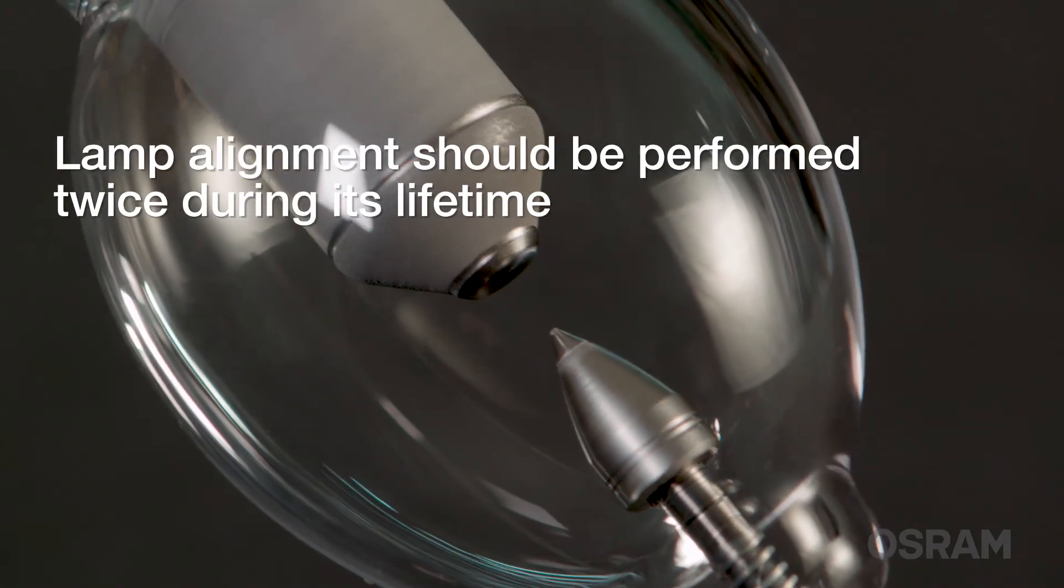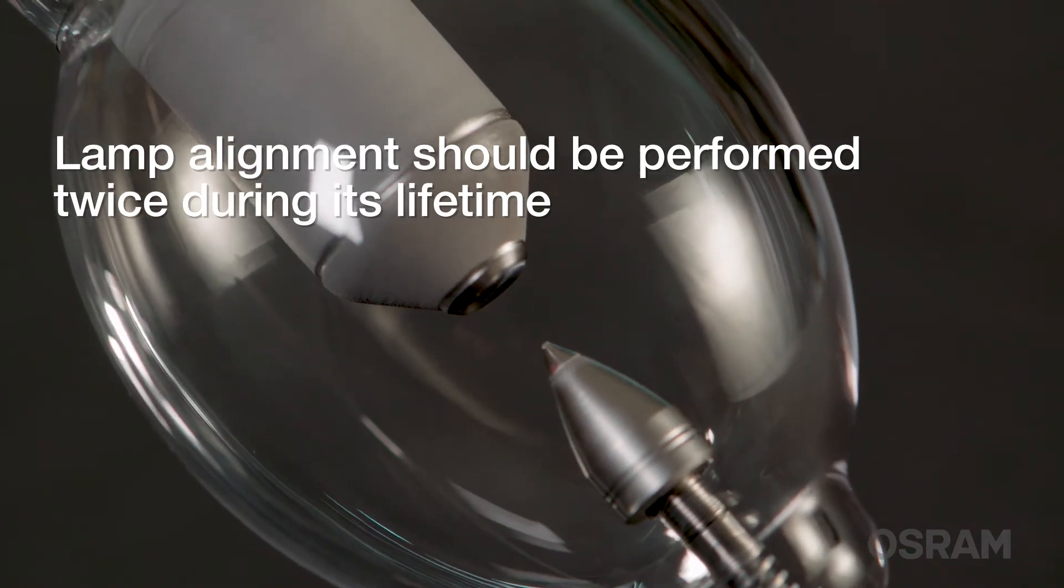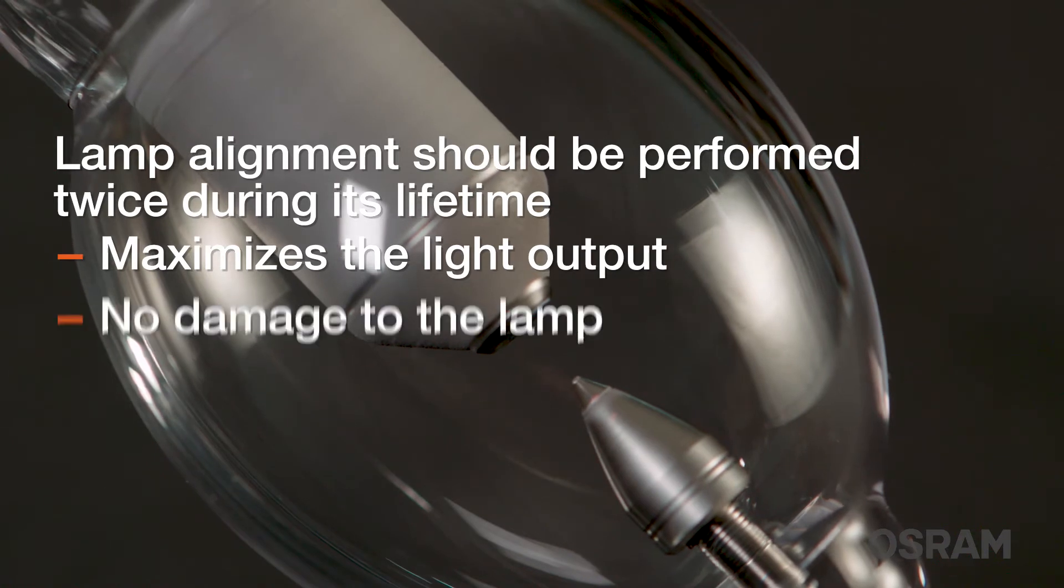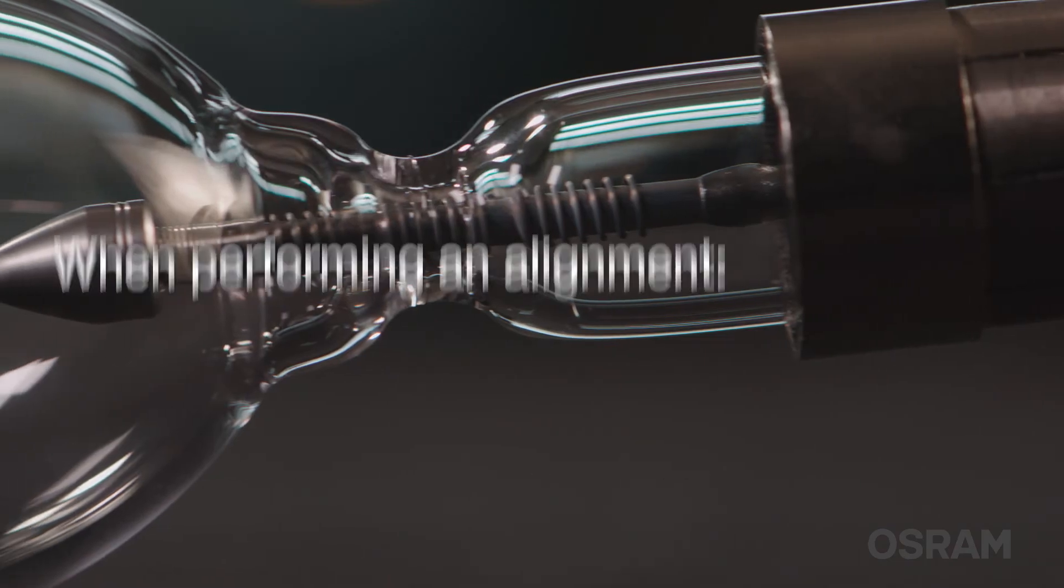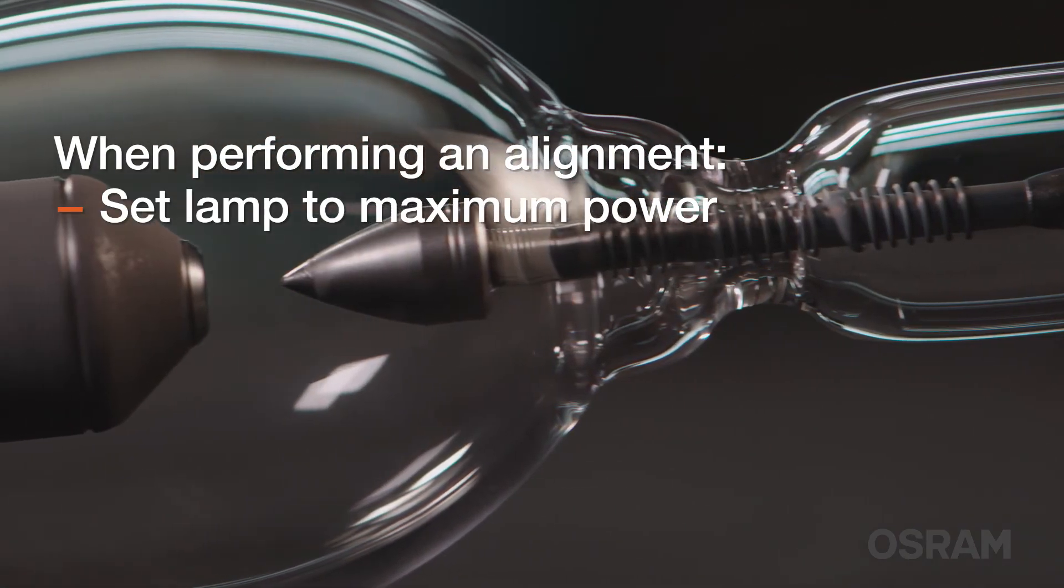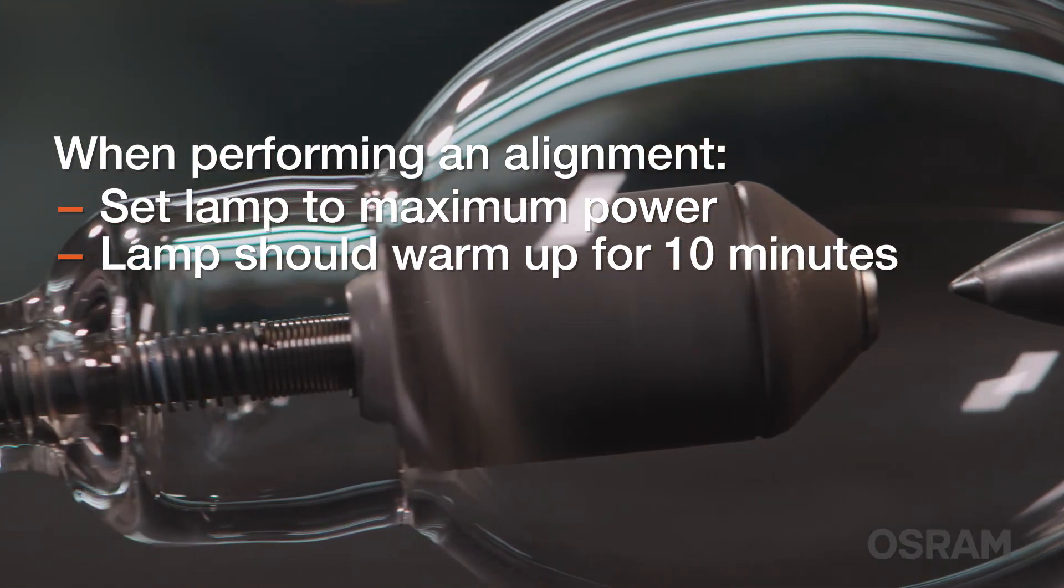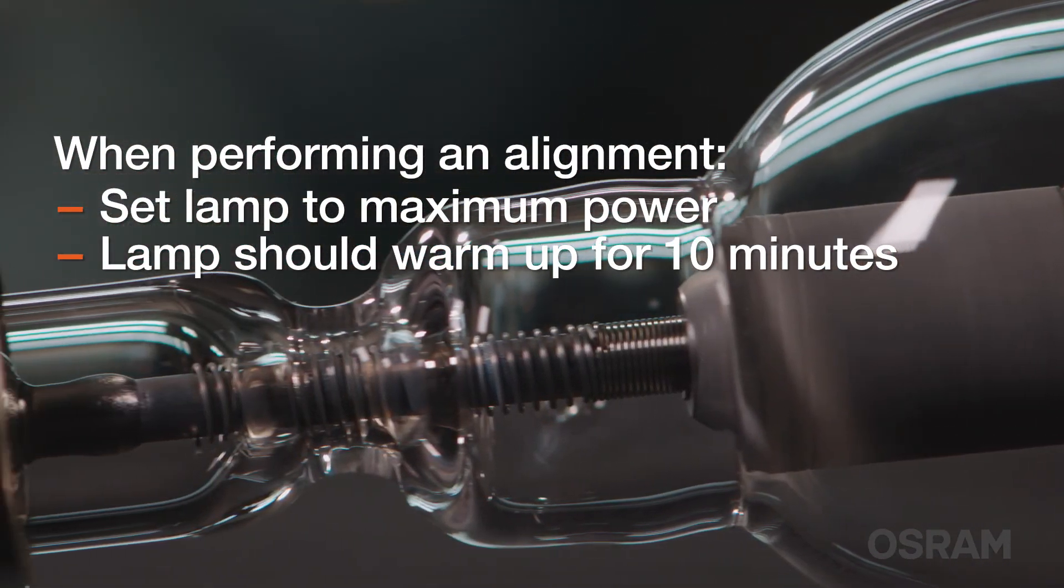Lamp alignment should be performed at least two times throughout a lamp's life, which will maximize the light output of the projector each time it is done, while causing no damage to the lamp. When performing an alignment, the lamp should be set to maximum power and allowed to warm up and stabilize for a minimum of ten minutes prior to starting the procedure.